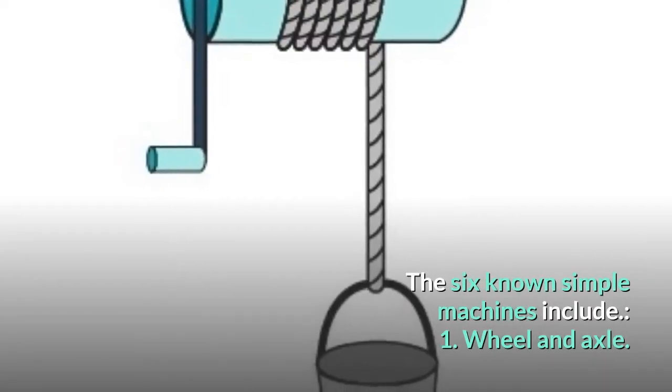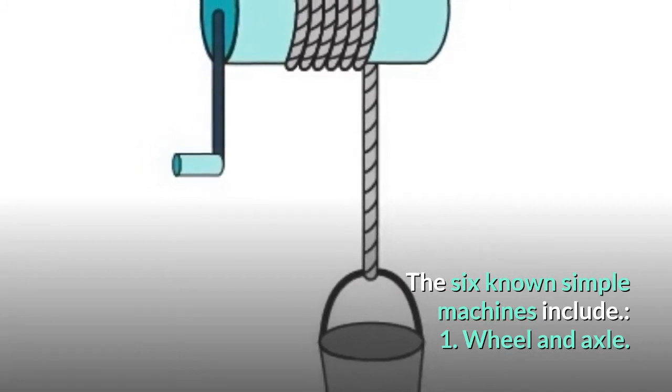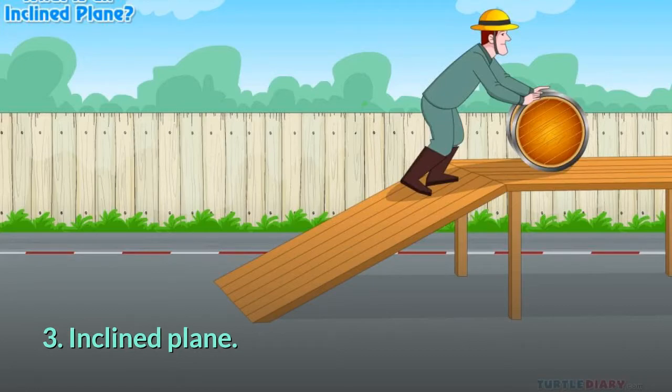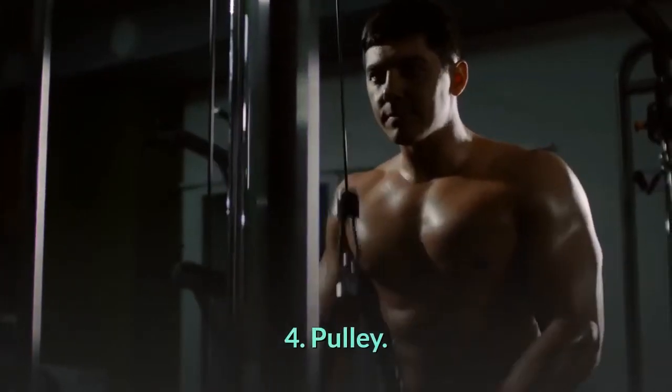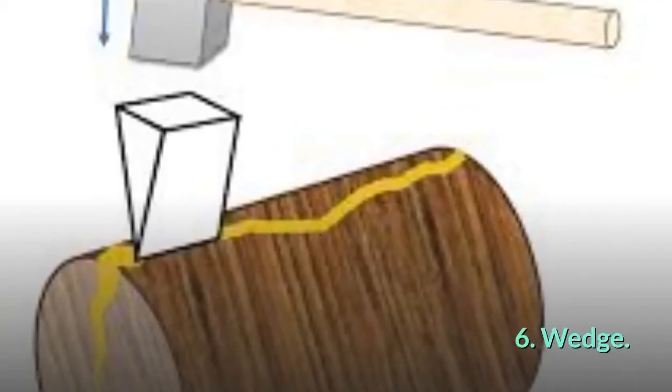The six known simple machines include: 1. Wheel and Axle. 2. Levers. 3. Inclined Plane. 4. Pulley. 5. Screw. 6. Wedge.